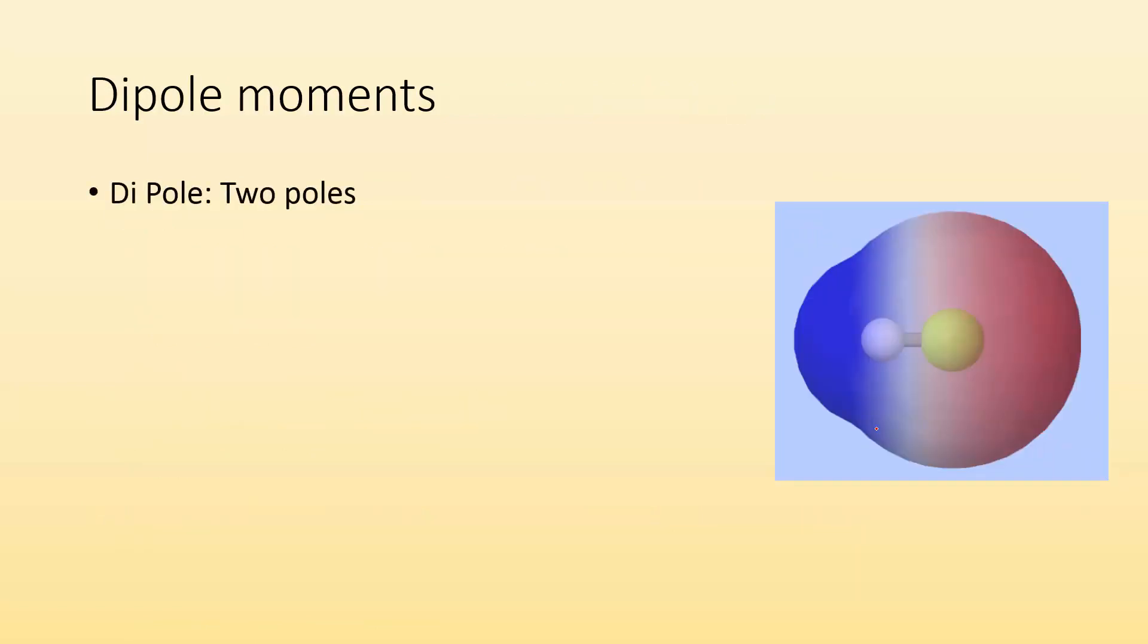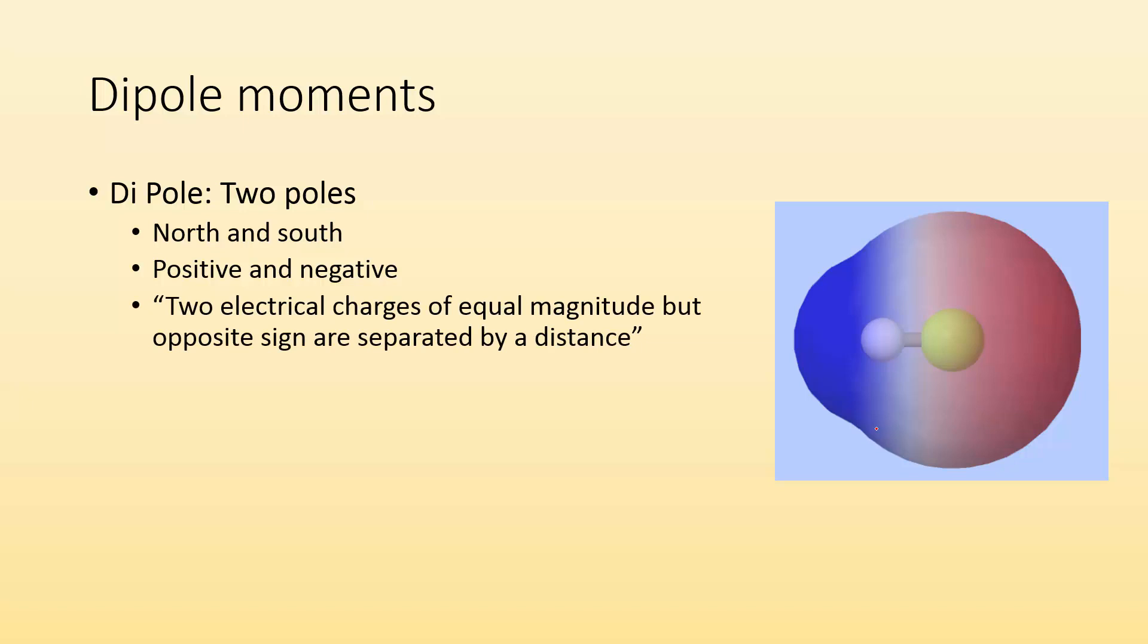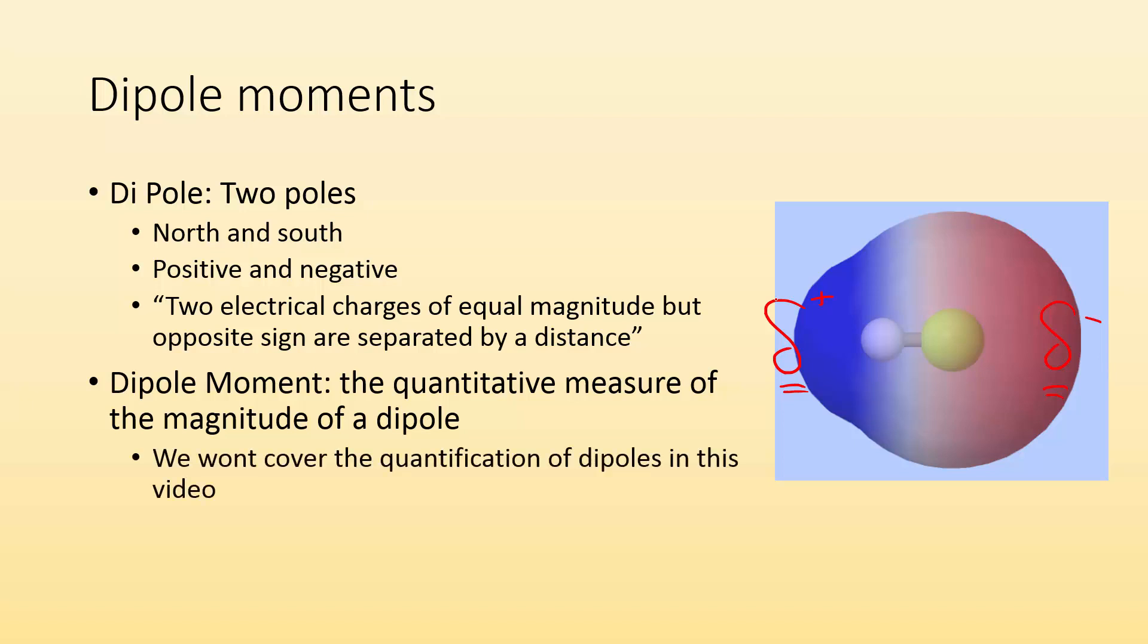So dipole moments - how do we express this polar bondness? Let's break down the word dipole. It means two poles. Di means two, pole means pole, just like there's a north and south pole or a positive and negative pole on a magnet. We have the same kind of thing going on with these polar bonds. A dipole is two electrical charges of equal magnitude but opposite sign that are separated by distance. You can see this end of the molecule has a negative charge going on, and this end has a positive charge. The magnitude of each is equal, but they're oppositely charged and separated over a distance. So we have a dipole. Then we have dipole moment, which is the quantitative measure of the magnitude of a dipole, putting numbers to it. We're not going to cover that in this video.